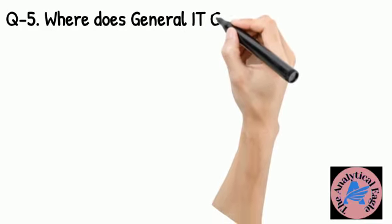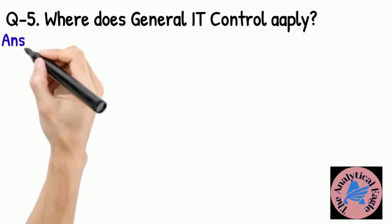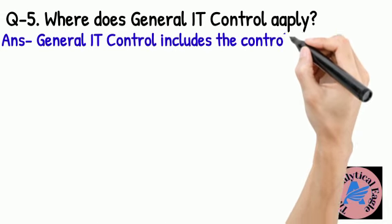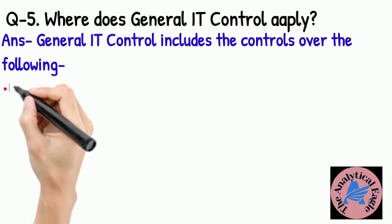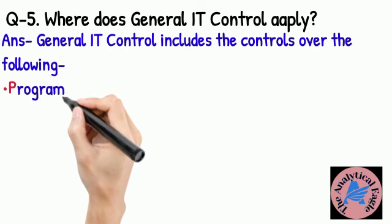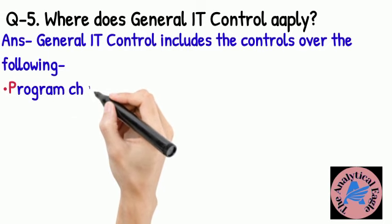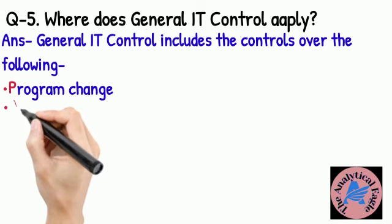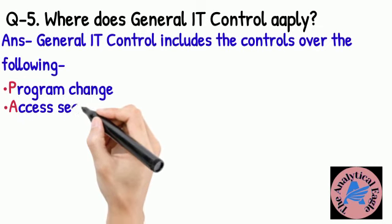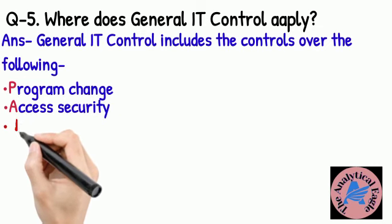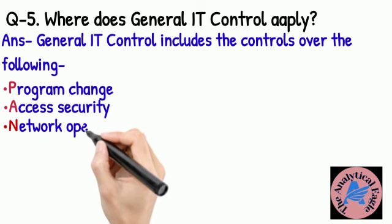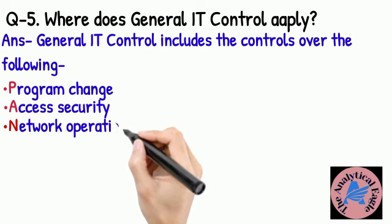Question 5: Where do General IT Controls apply? The mnemonic is PANDA. P stands for Program Change, A stands for Access Security, N stands for Network Operations, D stands for Data Center, and A stands for Application System Acquisition, Development and Maintenance.